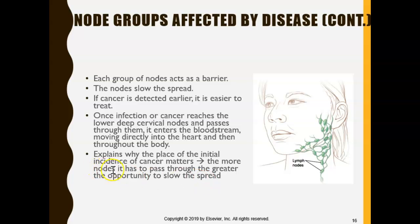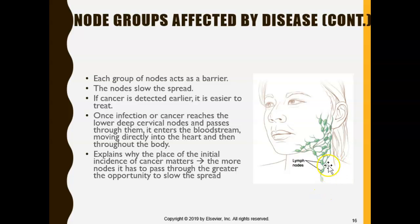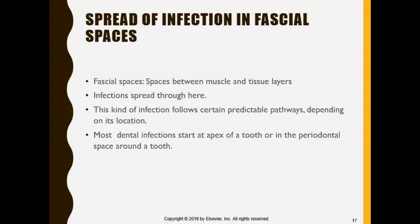The more nodes the infection or cancer has to pass through, the greater the opportunity to slow the spread. Once it reaches the lower deep cervical nodes, it can easily enter the bloodstream and travel throughout the body. We want these nodes to prevent and stop the cancer or infection from spreading.